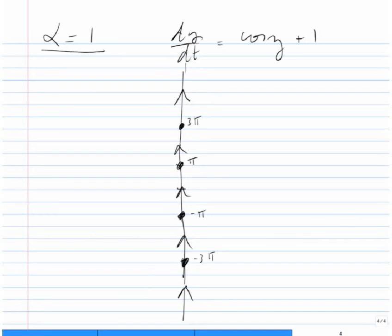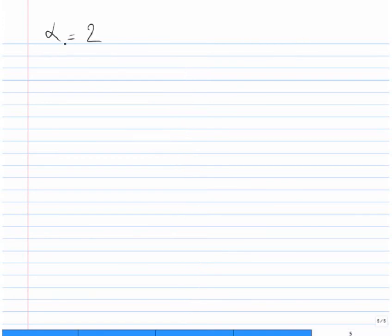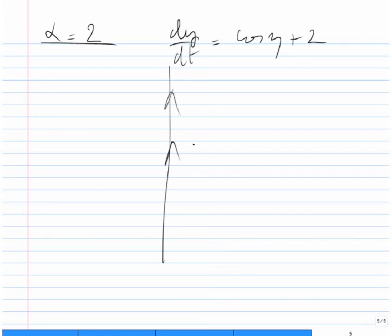For α = 2: dy/dt = cos(y) + 2, which has no constant solutions. The function cos(y) + 2 is always positive, so all solutions are going up.